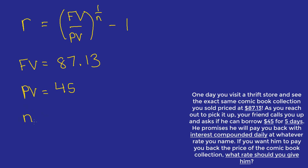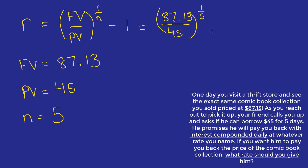To find the number of periods, we recognize that our friend is borrowing the money for five days and paying interest compounded on a daily basis. So the number of periods equals the number of days, meaning n equals 5. We plug the values in: (87.13 over 45) raised to (1 over 5), minus 1. That gives us approximately 0.1413, or 14.13%.